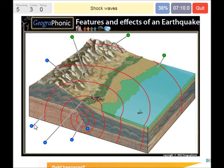So these red lines are the shock waves or seismic waves. This line is the fault plain.